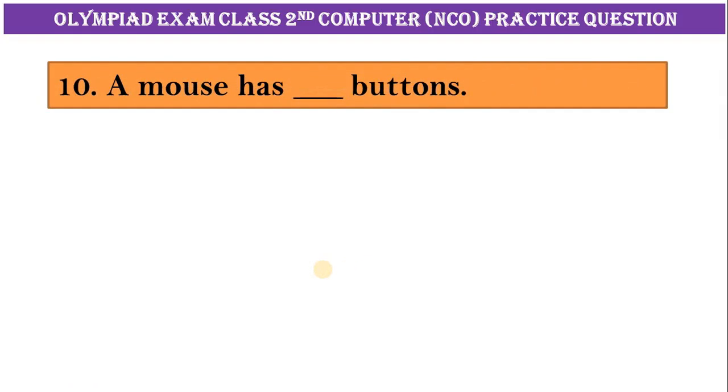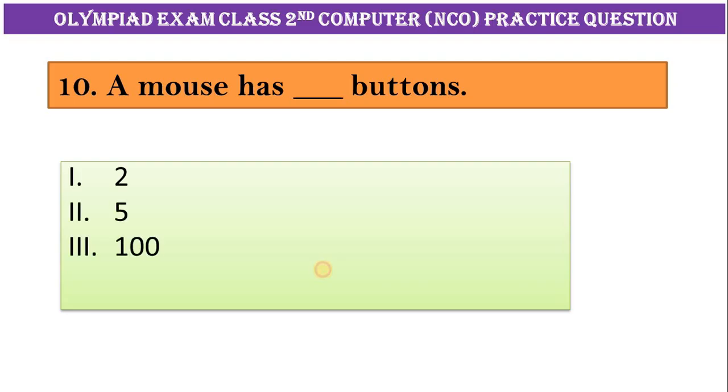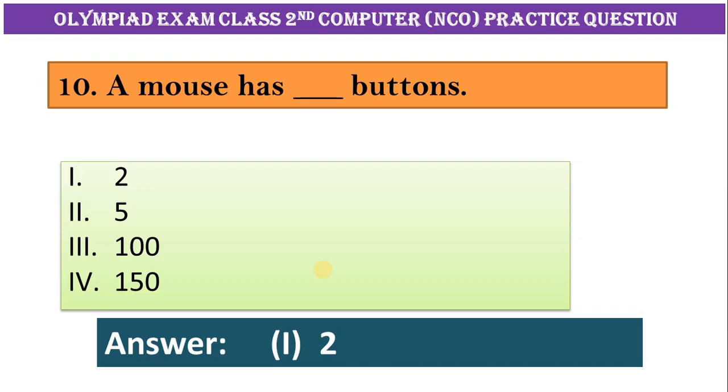Number ten: a mouse has dash buttons. One, two, five, one hundred, one fifty. Correct answer is option one, two.